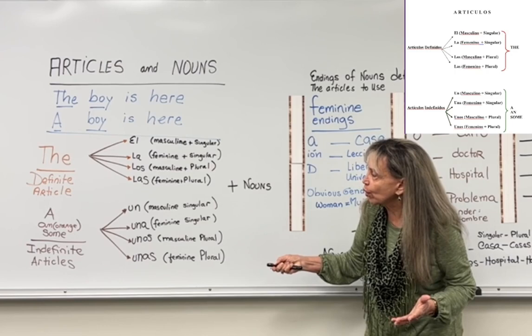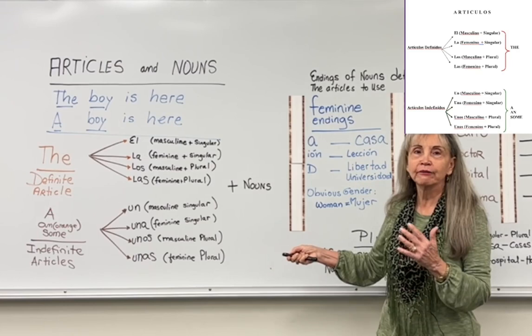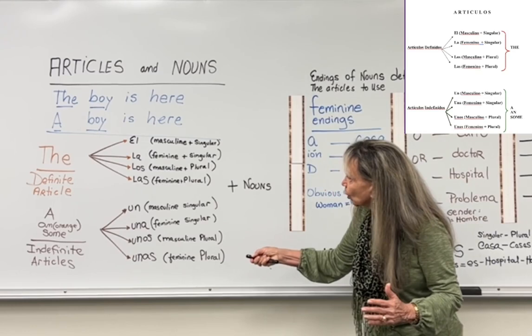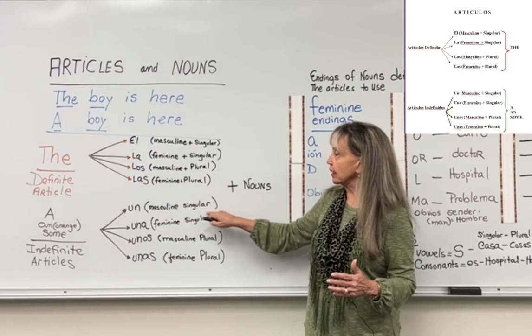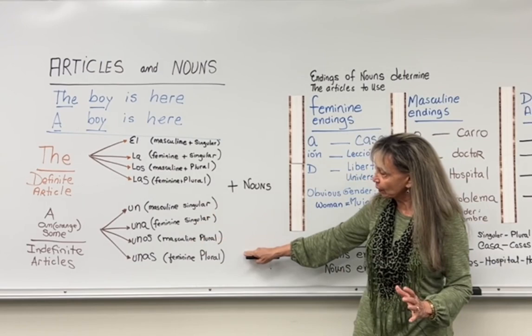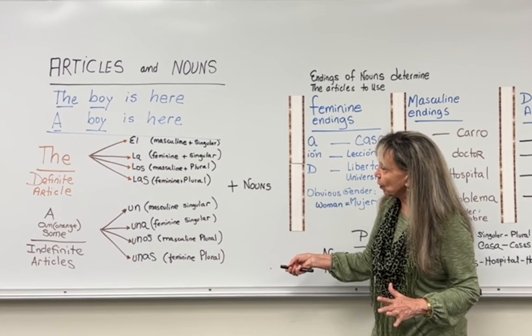The indefinite articles in English are 'a,' 'an' — like in 'an orange' — or 'some.' These are the indefinite articles. You have four translations: un, una, unos, unas. Un is masculine singular, una is feminine singular, unos is masculine plural, and unas is feminine plural.